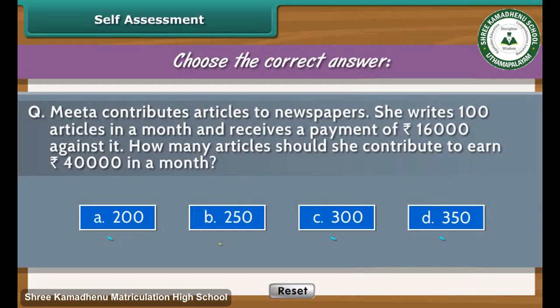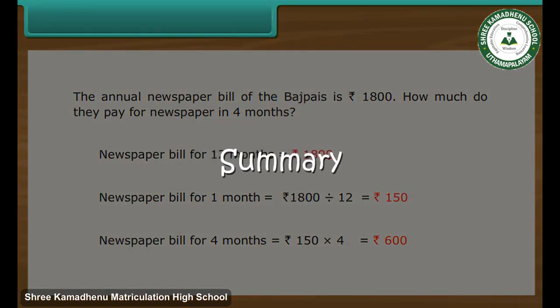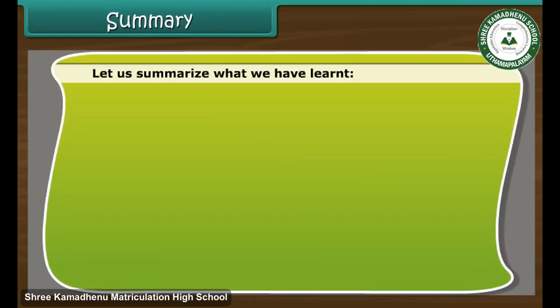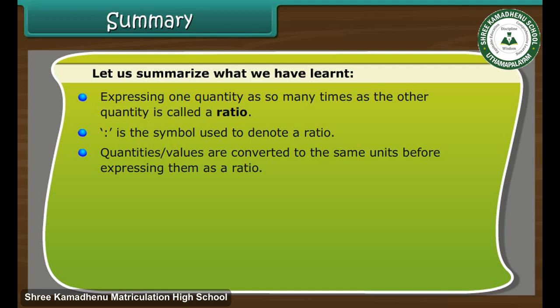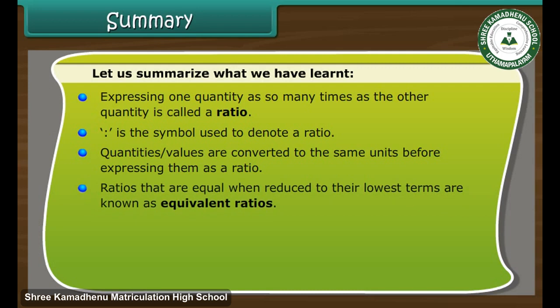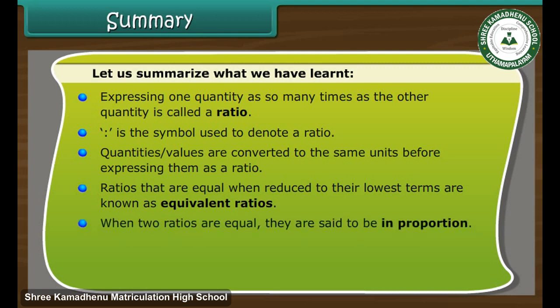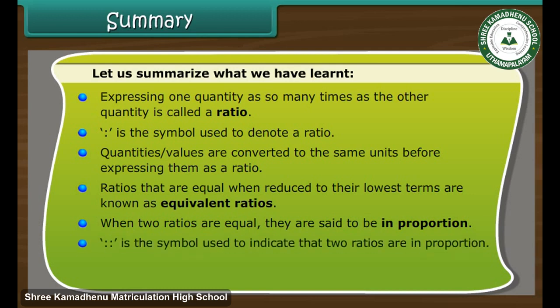Self-assessment: attempt a question to test your understanding of unitary method. In summary: expressing one quantity as so many times the other quantity is called a ratio; colon is the symbol used to denote a ratio; quantities and values are converted to the same units before expressing them as a ratio; ratios equal when reduced to lowest terms are equivalent ratios; when two ratios are equal, they are said to be in proportion.